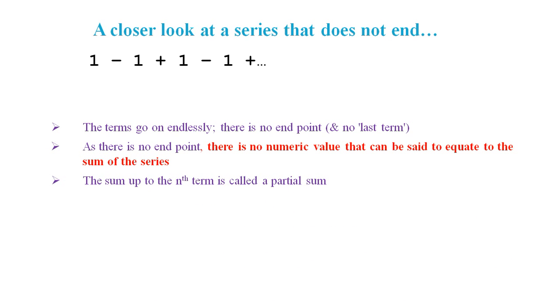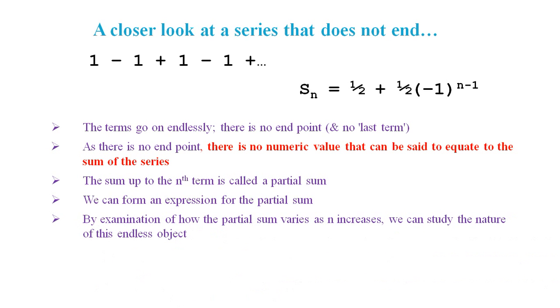The sum up to the nth term is called a partial sum. So we can actually add up the first term on its own, the first two terms, the first three terms, the first four terms, and so on. These are called partial sums. We can form an expression for this partial sum. Here we've got Sn, the sum to the nth term, is 1/2 plus 1/2 times -1 to the power n-1. By examination of how the partial sum varies as n increases, we can study the nature of this endless object. And it could be said that the partial sum expression defines the series.